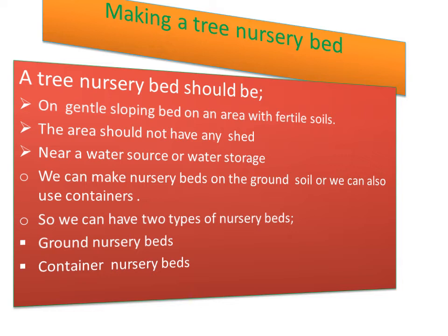We can make nursery beds on the ground soil or we can also use containers — those are the two types of tree nursery beds. Ground nursery beds are where you go to the farm, dig and level the soil on a sloping level, then plant your seeds in a square or rectangular bed. Container nursery beds use containers filled with soil and seeds, watered enough to allow germination.